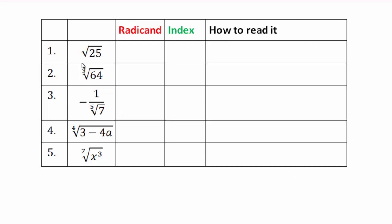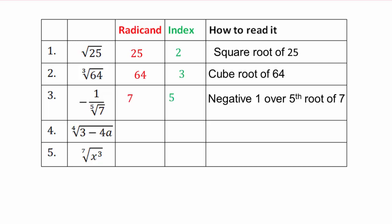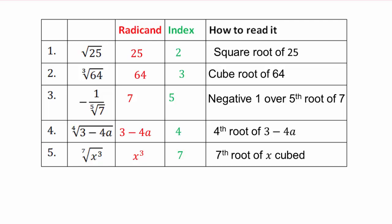Go ahead and give the radicand, index, and how you would read it out loud. So 25 is the radicand; when there is no number shown, the index is 2 and you would read that as square root of 25. Pause the video, do the problems, and then check. We threw in one over fifth root of 7: the negative doesn't affect the exponent — 7 is the radicand, 5 is the index, so you have negative one over fifth root of 7. Also: fourth root of 3 minus 4a, and seventh root of x cubed.